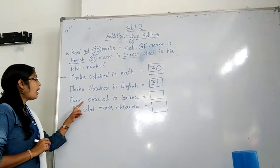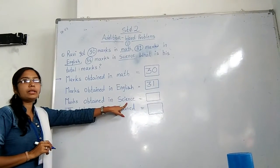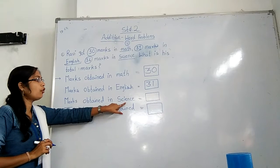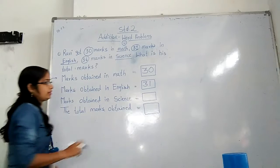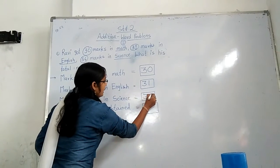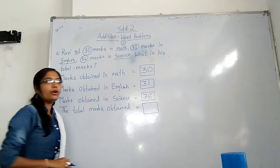And then marks obtained in which subject? Science. How many marks did he obtain in science subject? 36. So write here 36.